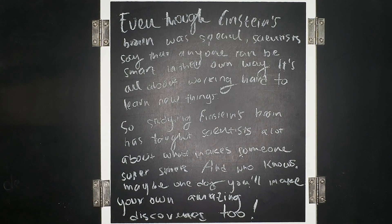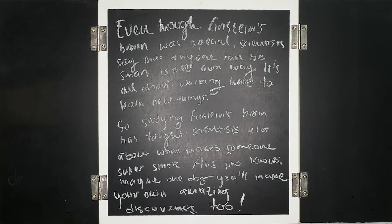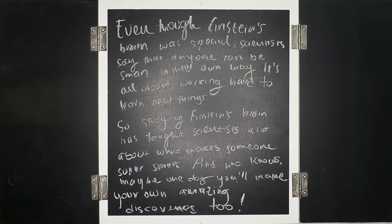Even though Einstein's brain was special, scientists say that anyone can be smart in their own way. It's all about working hard to learn new things. Studying Einstein's brain has taught scientists a lot about what makes someone super smart. And who knows, maybe one day you'll make your own amazing discoveries too. This is the last paragraph, and there's no need to identify the sentences from it, because this was the conclusion.